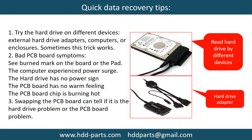There are some simple ways to recover data from a hard drive. One of them is to try reading the hard drive with different devices, like different external hard drive adapters, computers, or enclosures, because different devices use different ways to read a hard drive and sometimes this trick works. Another way is swapping the hard drive PCB board, which can fix problems caused by the PCB board. There is a cost to swapping the PCB board, but it is much cheaper than sending the hard drive to a data recovery firm.